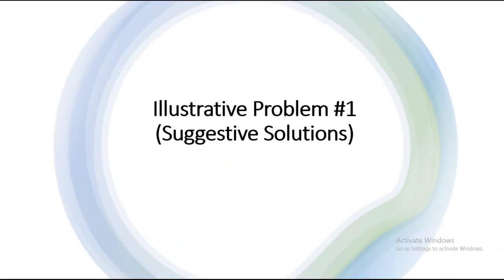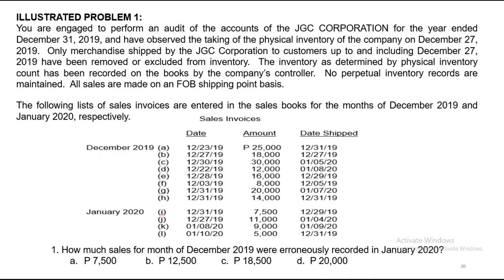Let's proceed to illustrative problem number one, which is about cutoff procedures. You are engaged to audit the accounts of JGC Corporation for the year ended December 31, 2019. Physical inventory was observed on December 27, 2019. Only merchandise shipped by JGC Corporation to customers up to and including December 27, 2019 has been excluded from inventory. No perpetual inventory records are maintained and all sales are made on an FOB shipping point basis.